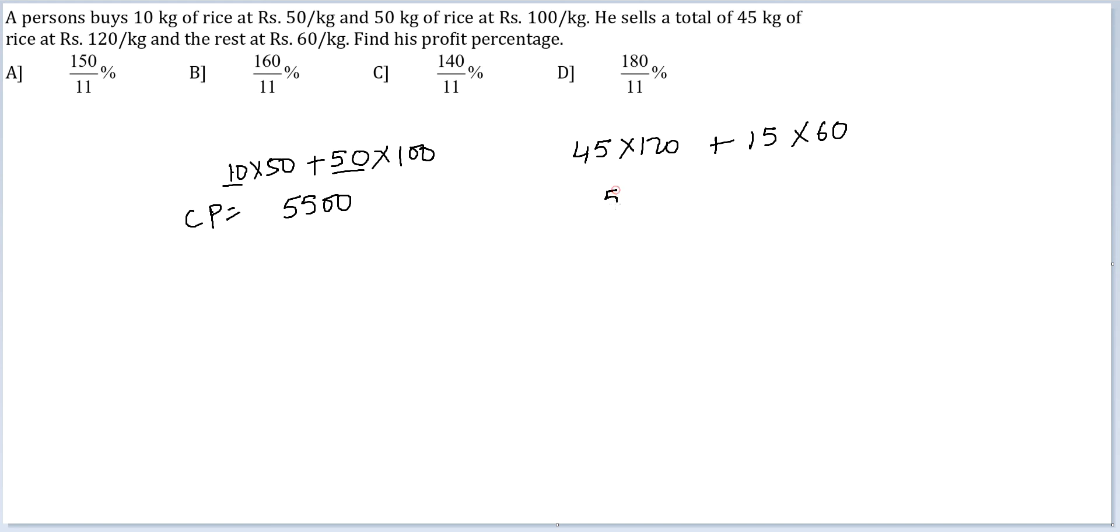45 into 120 gives me 5400. 15 into 60 gives me 900. So his total SP is now 6300, and his total profit is 800.